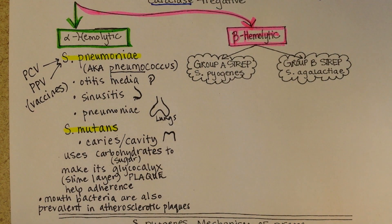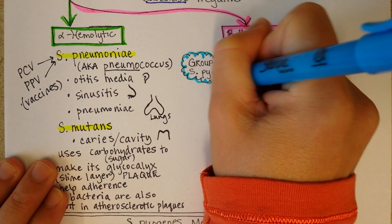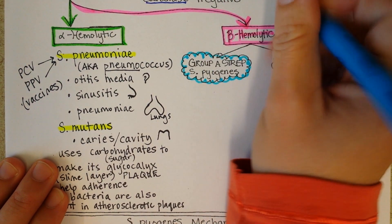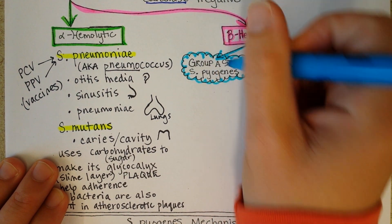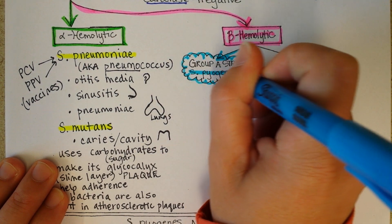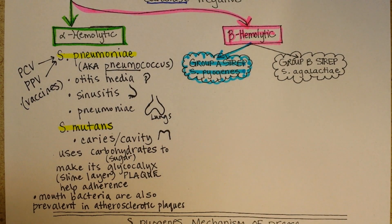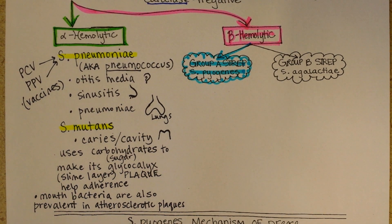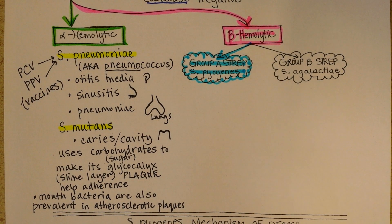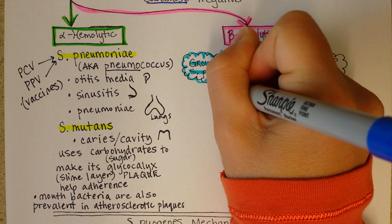First we'll look at Group A strep. This is what you know of as strep throat, caused by Streptococcus pyogenes. That name — pyogenes — basically means pus former. So that's how it got named.